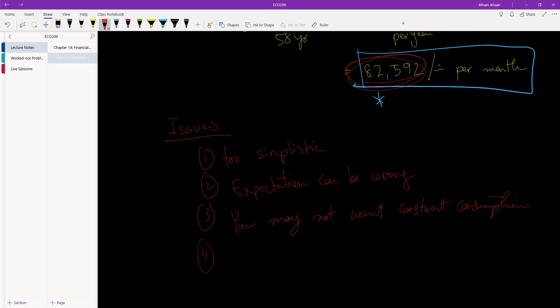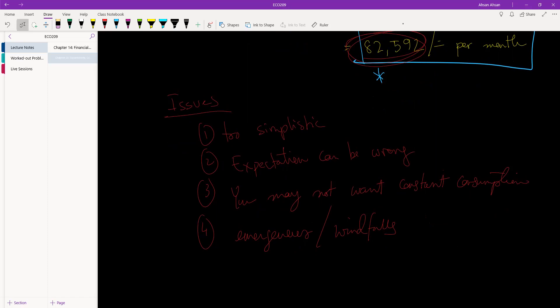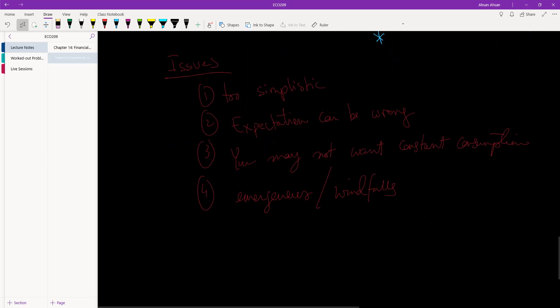So what other problem is there? It ignores that there might be emergencies or the opposite windfalls. Emergencies may deplete how much money you have. Sudden windfalls like you win the lottery. That may suddenly increase your... How much assets you have. So if you sit and think about it, it's easy to come up with a lot of problems. That's fine.